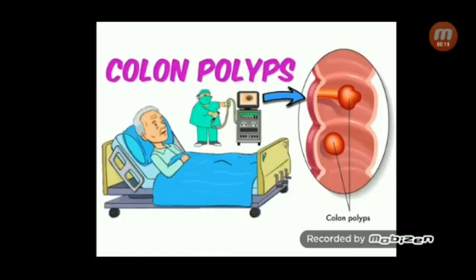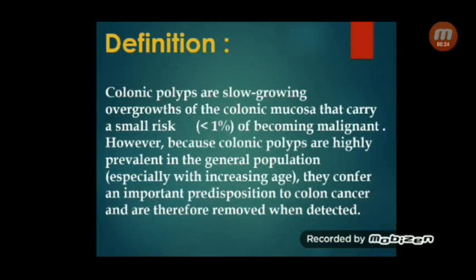Starting with the definition: the word polyp means abnormal tissue growth, and like other diseases, colonic polyp can be benign or malignant. Colonic polyps are slow-growing overgrowths of the colonic mucosa that carry a small risk of becoming malignant — less than 1%. However, because colonic polyps are highly prevalent in the general population, especially with increasing age, they represent an important predisposition to colon cancer and are therefore removed when detected.